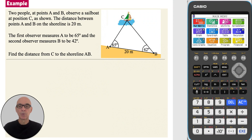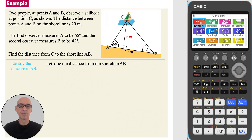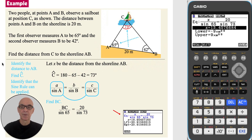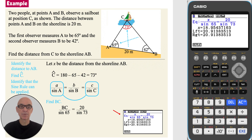In this question, to find the distance from C to the shoreline AB, start by identifying that distance on the diagram. Let the perpendicular distance from C to AB be X. Then find angle C, which is equal to 73 degrees. Identify that the sine rule can be applied — since one pair of side and angle are known and angle A is known, we can find the side opposite angle A, which is BC. Substitute in the values and then use Solver on the calculator. Write down the value of X, which represents BC, correct to three significant figures. So BC is equal to 19.0 metres.